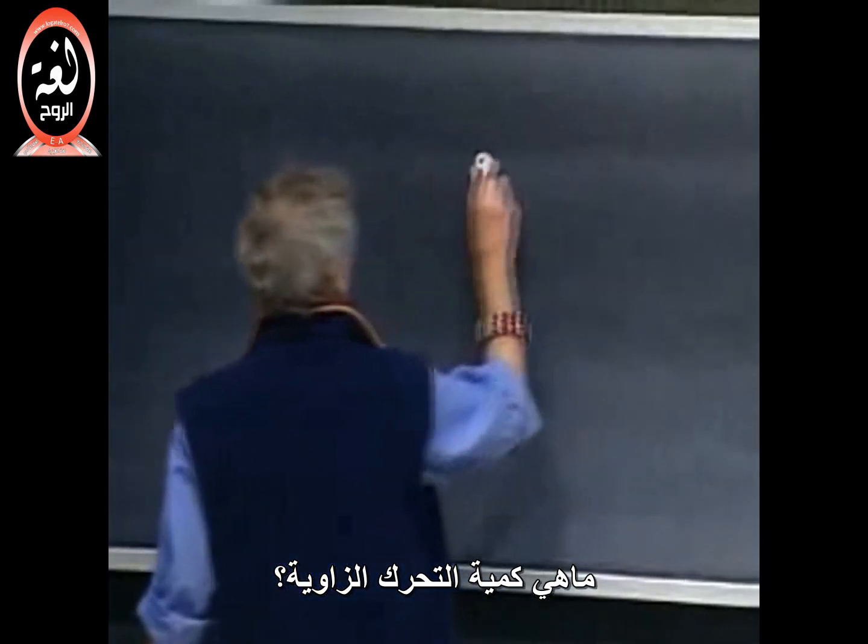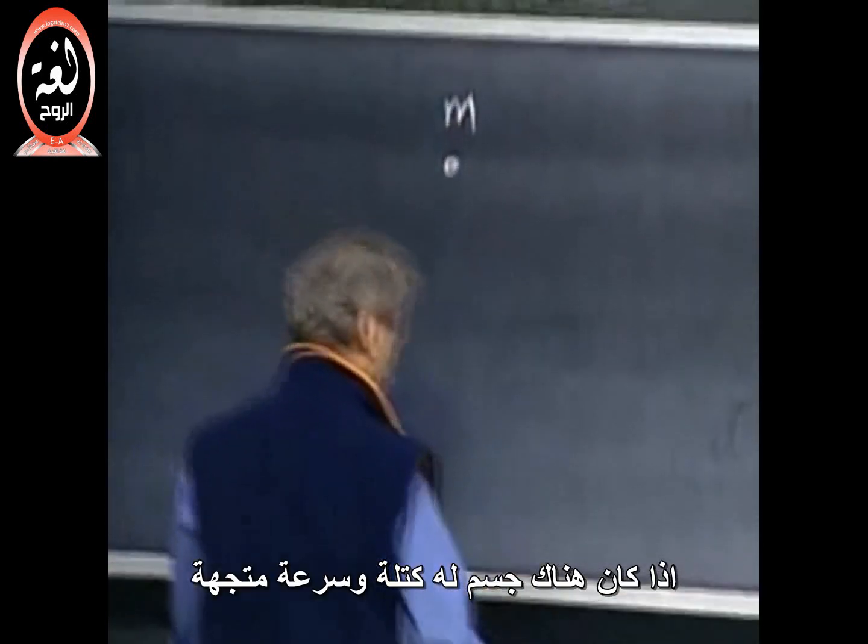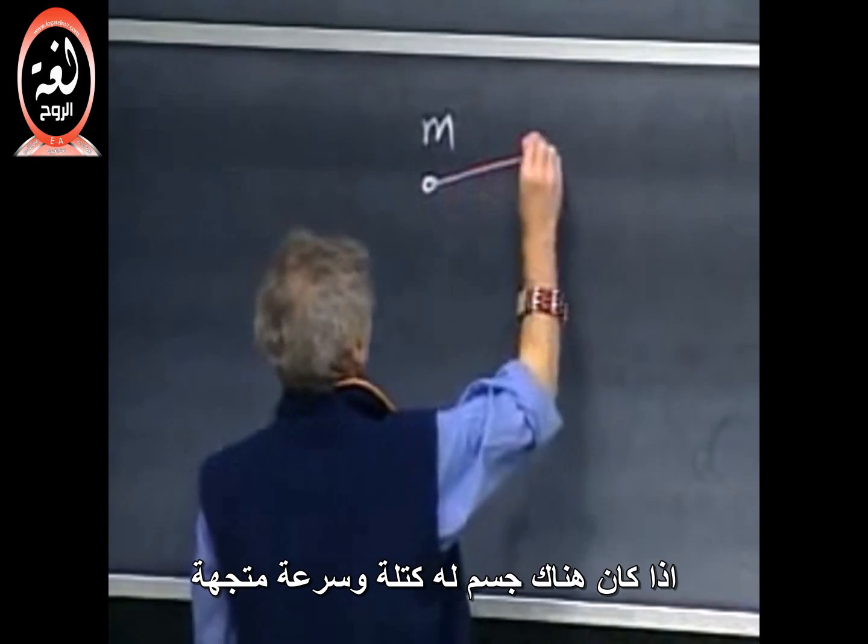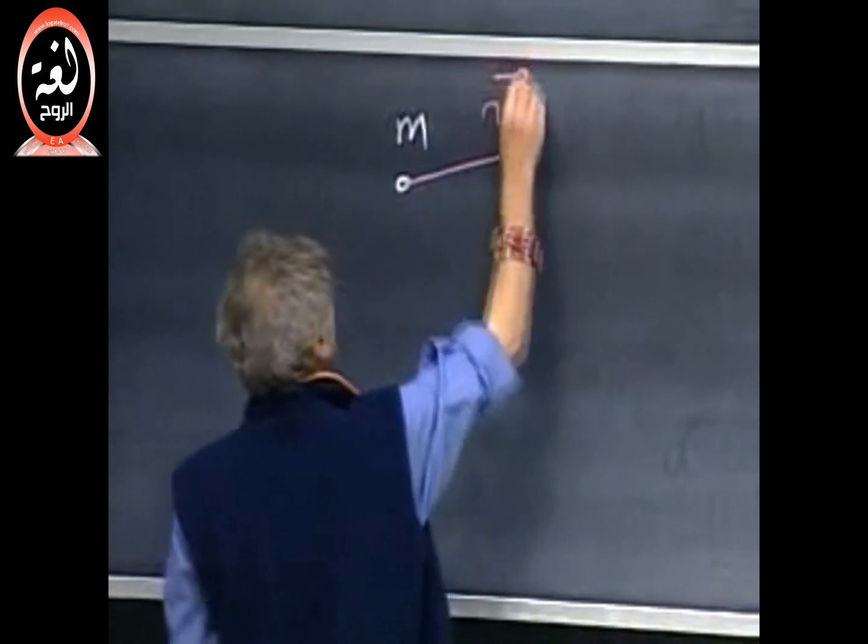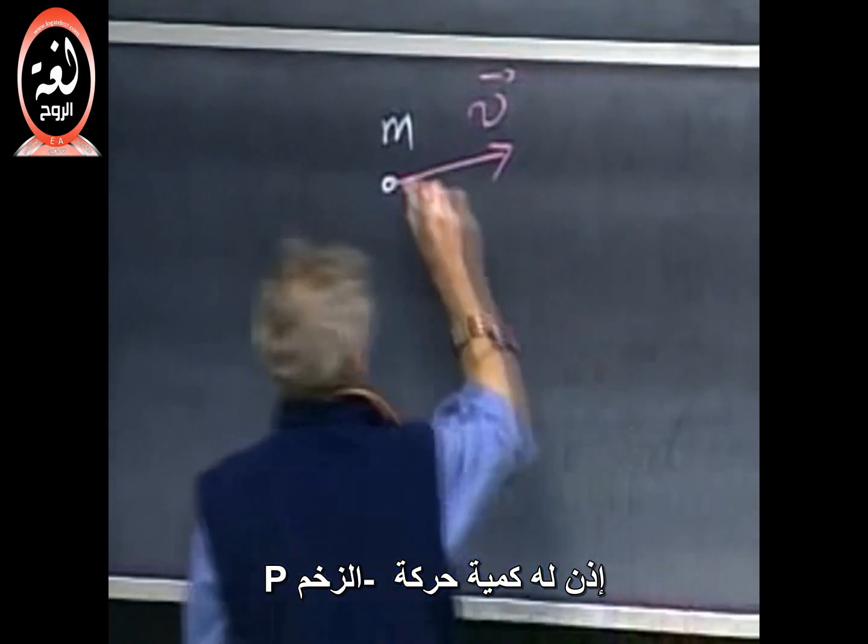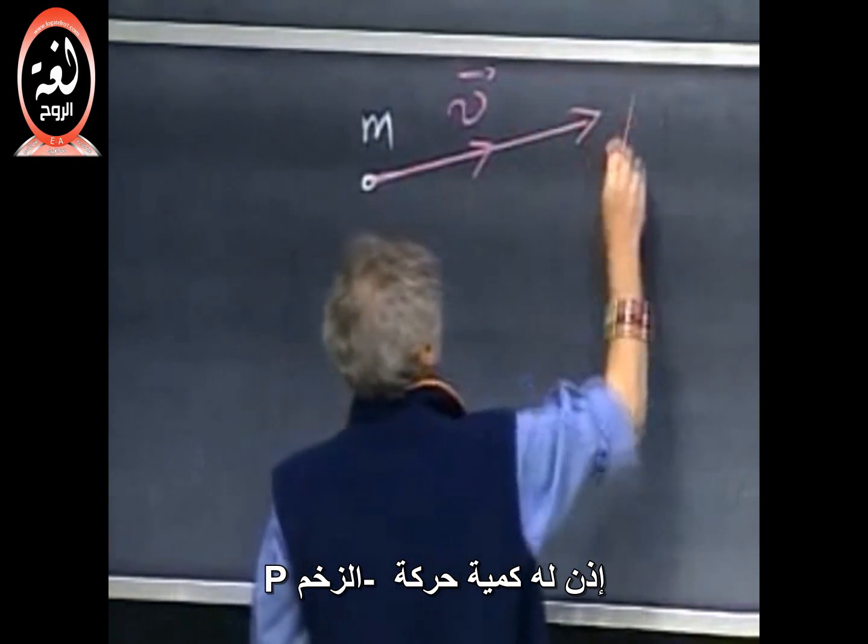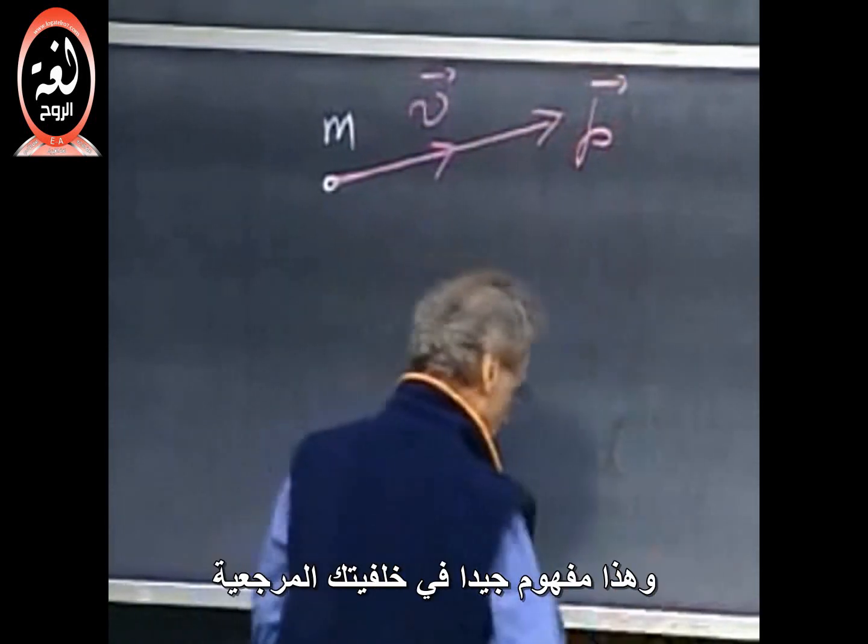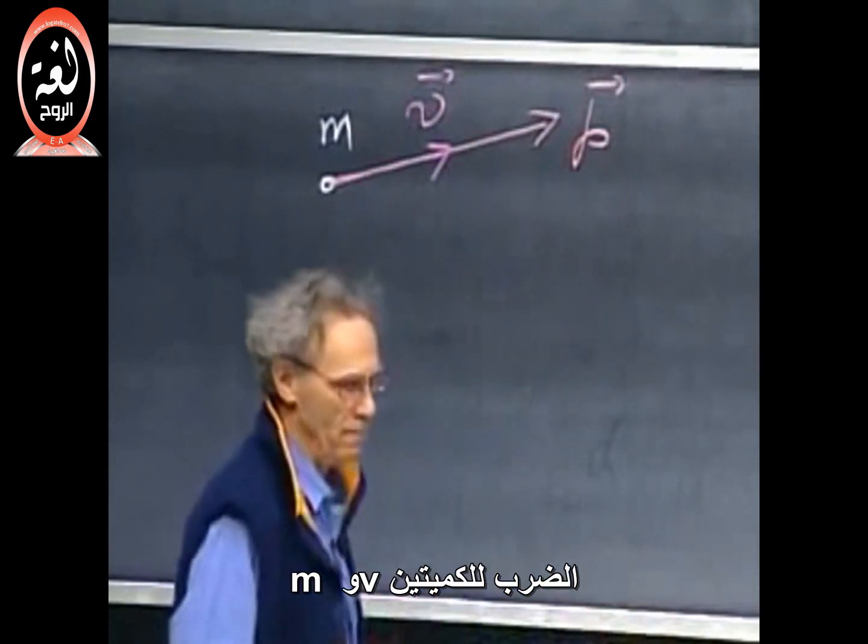What is angular momentum? If an object has a mass m and it has a velocity v, then clearly it has a momentum p. That's very well defined in your reference frame, the product of m and v.